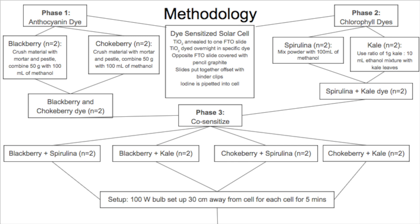The methodology for this experiment involves constructing dye-sensitized solar cells using fluorine-doped tin oxide glass with titanium dioxide annealed to one plate and dyed overnight. The opposite FTO glass is covered in pencil graphite, the two plates are held together by binder clips, and iodide electrolyte is pipetted into the cell. Phase 1 uses anthocyanin dyes: blackberry dye and chokeberry dye are each extracted by crushing 50 grams of material in a mortar and pestle and mixing with 100 milliliters of methanol. Blackberry dye acts as the control, and the dyes are also combined in a 1-to-1 ratio to create a third dye for this phase.